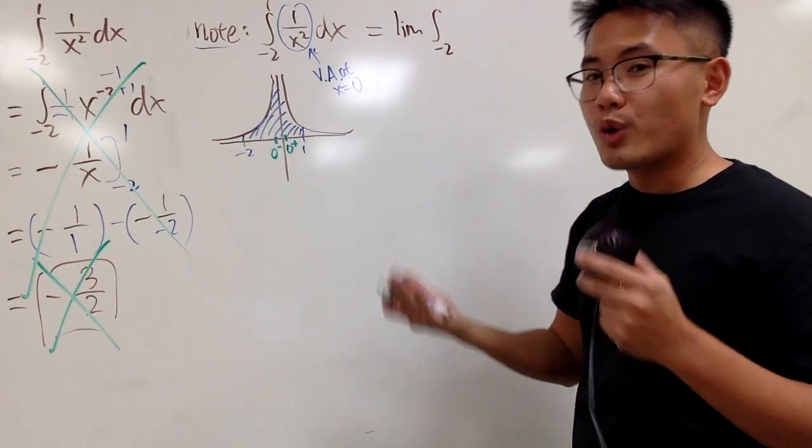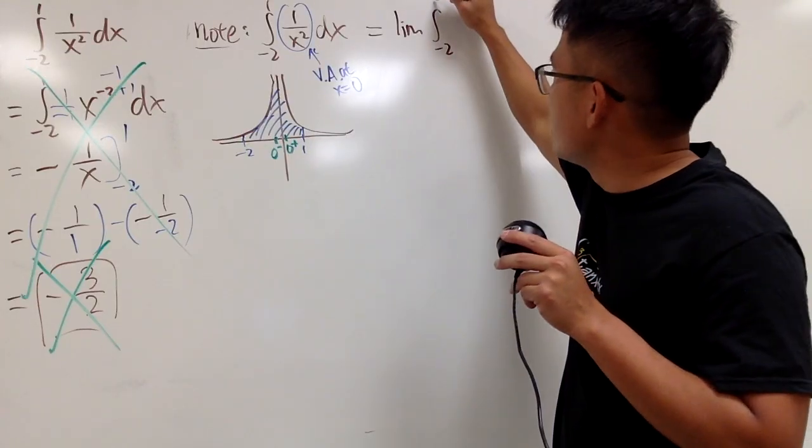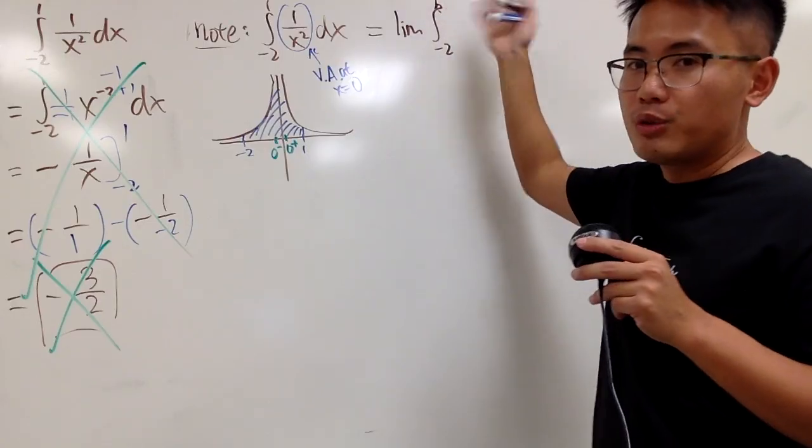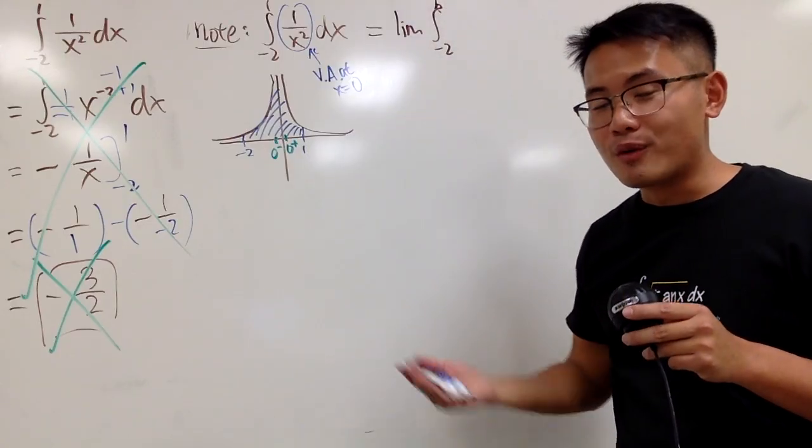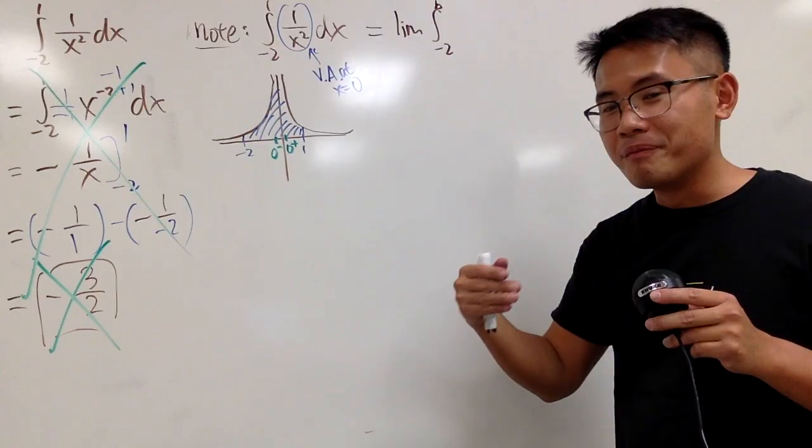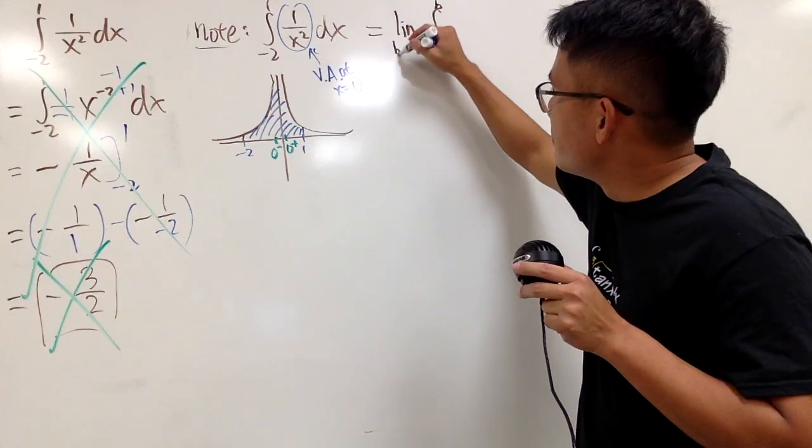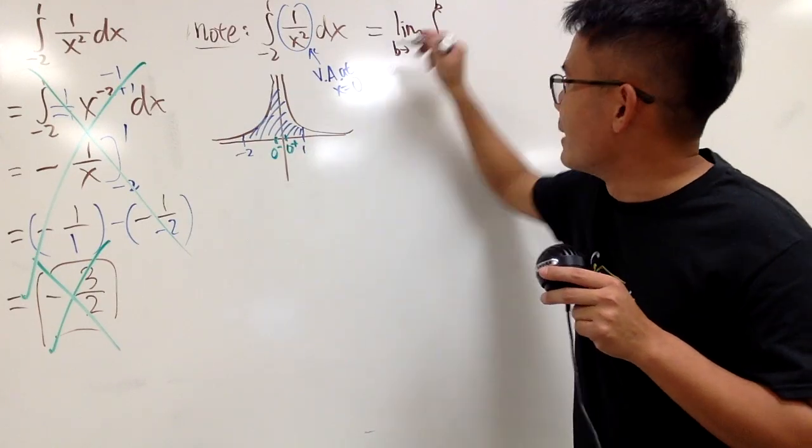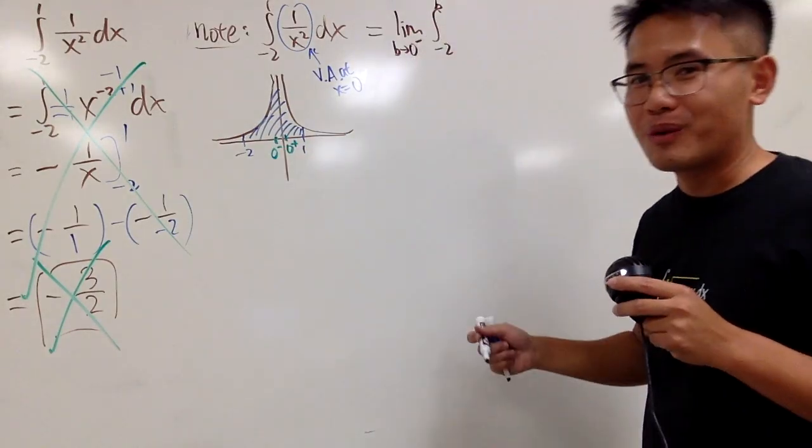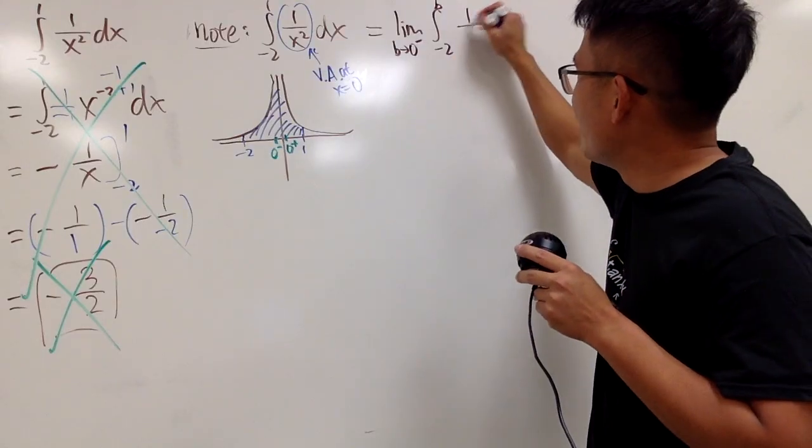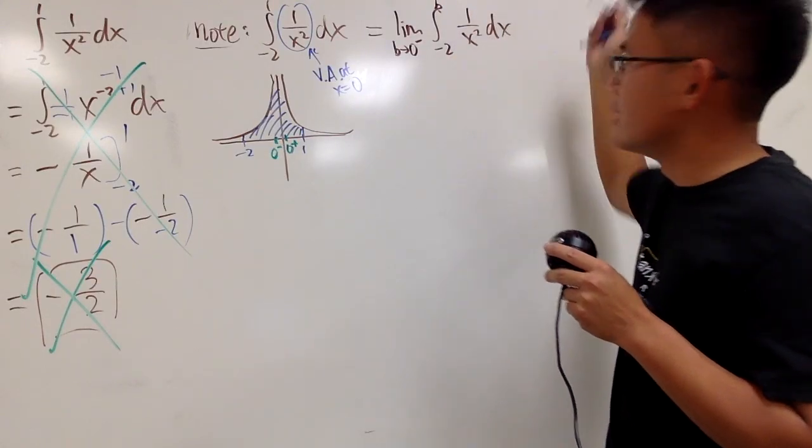But this right here is where we require the limit. So, we will have to take a variable right here, let's say b. You can use any other letters that you want. But of course, usually, when we have the integral, it's the integral from a to b. That's why I put a b on the top. And we put b approaches to 0 minus. So, this is the proper way to deal with that.